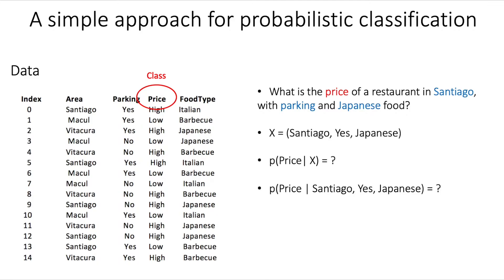The blue words are the input variables. We can see them here in the vector. And then the question is, what is the price given this input vector? In other words, if we model this with probabilities, it could be what is the probability of the price given the vector x or the probability of the price given that we know that the location is Santiago, that there is parking and the type of food is Japanese.